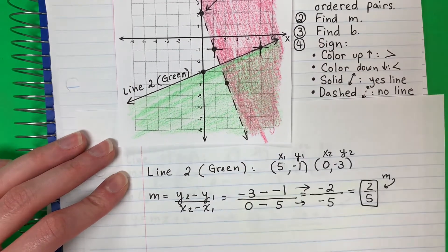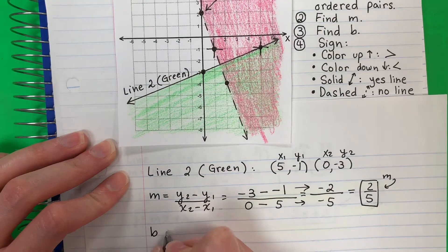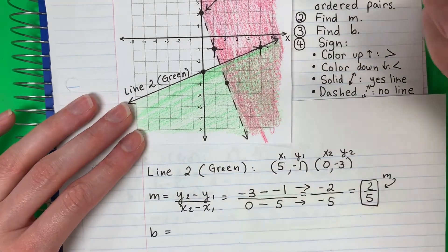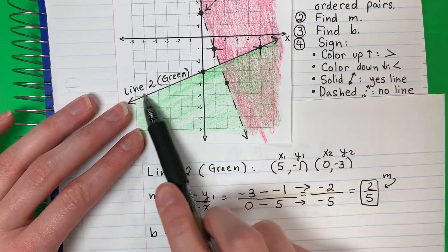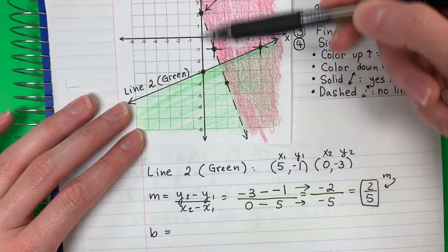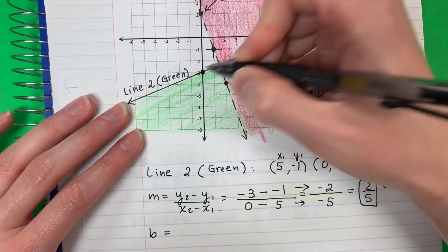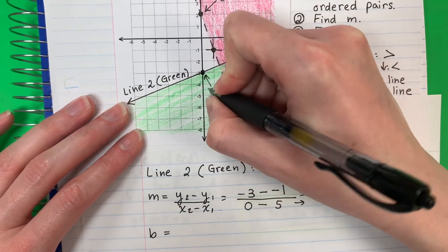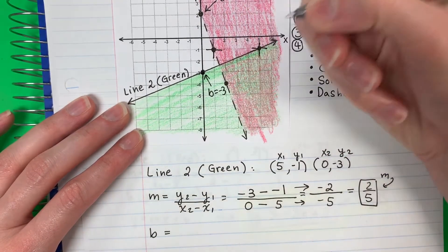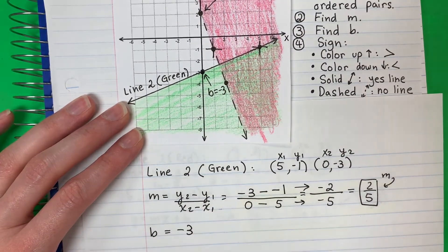Next I need to find b, the y-intercept. So where does this green line touch the y? Right here. This is my b. It's negative 3.